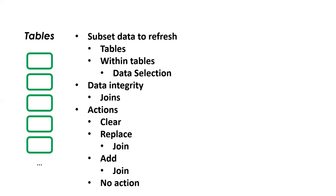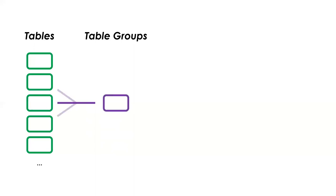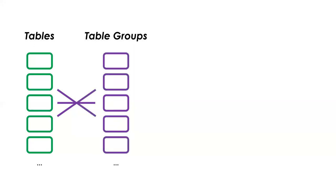There's also an action of 'no action,' so we can specifically say in our definition: yes, we've considered this table but don't want to do anything with it — so someone reviewing the configuration knows it was considered. The individual tables we define can then be moved into groups. A table group is effectively a set of tables we want to refresh together — like purchase order header, purchase order detail, ledger, receipts, price adjustments, order approvals, addresses, and so on. A table can exist within one table group, and many tables can exist within one table group.